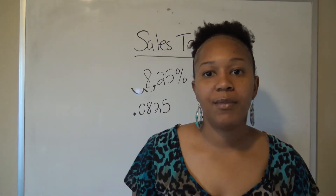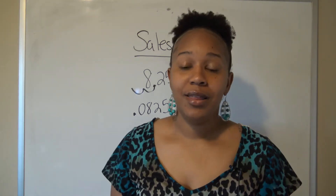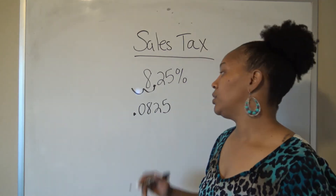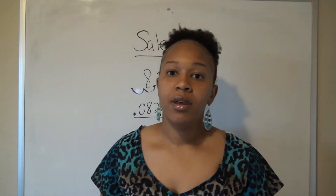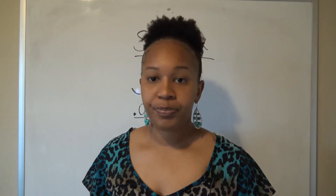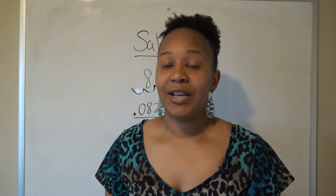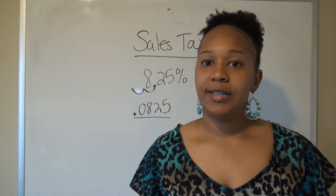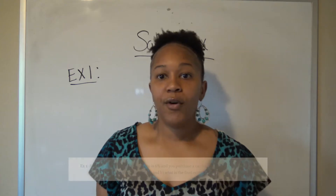Anytime you want to figure out what the tax amount is, you take the price of the product or service and multiply by 0.0825 — or whatever your state's sales tax rate is as a decimal. That's the general method. Now let's work through some examples.